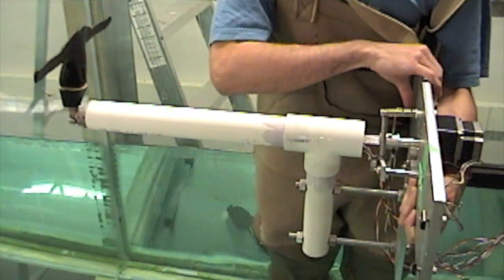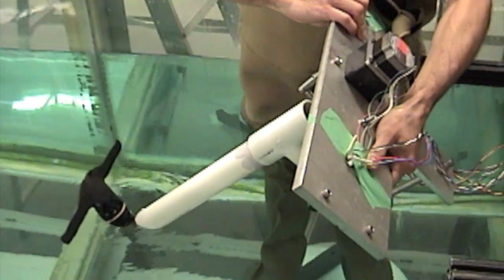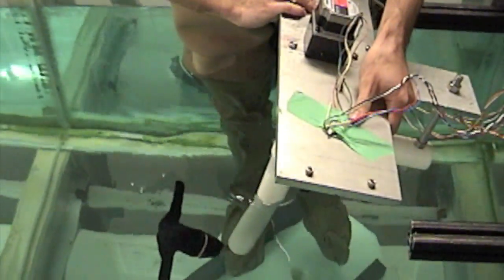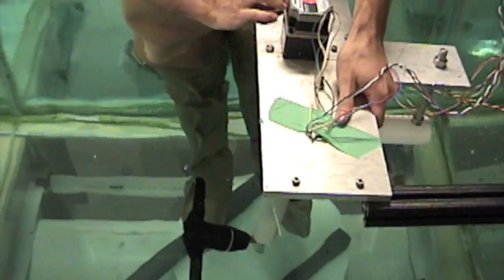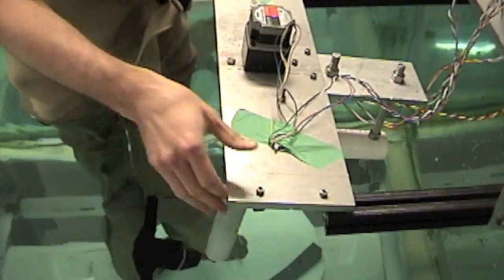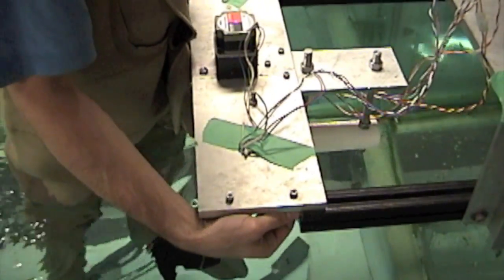The replica heads are mounted to a custom-made robotic apparatus that measures the forces exerted by the cephalofoil. A small motor is used to turn the head back and forth while the tow carriage drives along the tank.